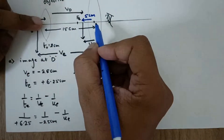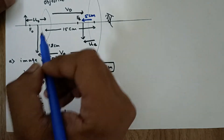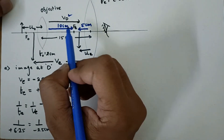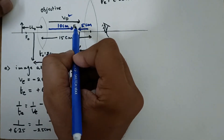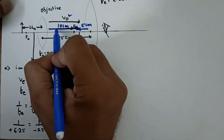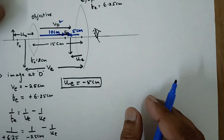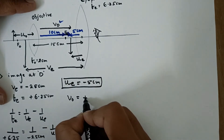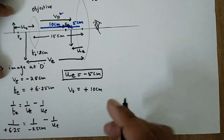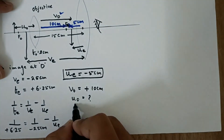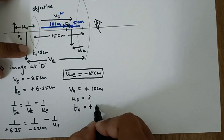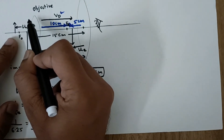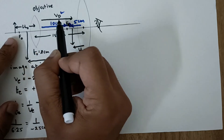So u_e is minus 5 centimeters, meaning this distance is 5 centimeters. The distance between the two lenses is already given as 15 centimeters, so we can find v_o as 15 minus 5 equals 10 centimeters. For the next part, v_o is plus 10 centimeters. We also know f_o is plus 2 centimeters as given in the question.